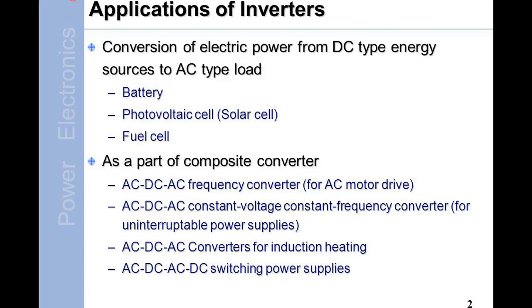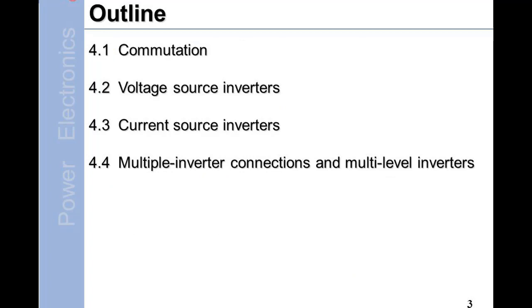As a part of composite converter: AC-DC-AC frequency converter for AC motor drive, AC-DC-AC constant voltage constant frequency converter for uninterruptible power supplies, AC-DC-AC converters for induction heating, AC-DC-AC-DC switching power supplies. Outline: 4.1 Commutation, 4.2 Voltage Source Inverters.